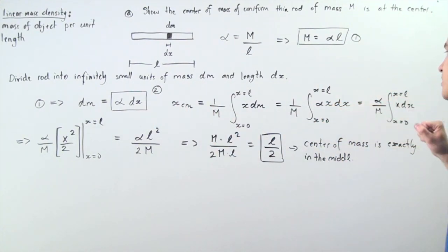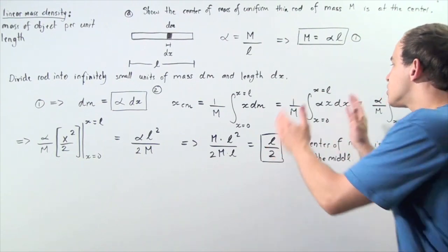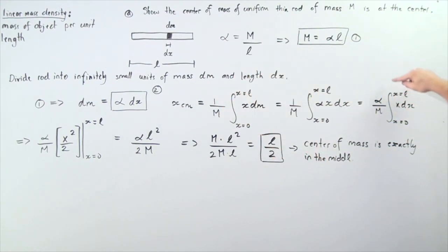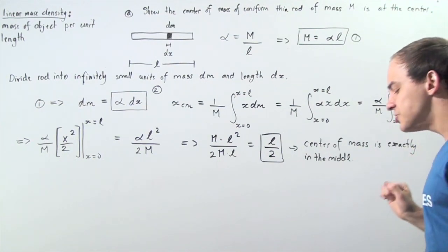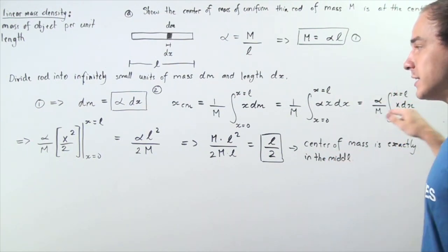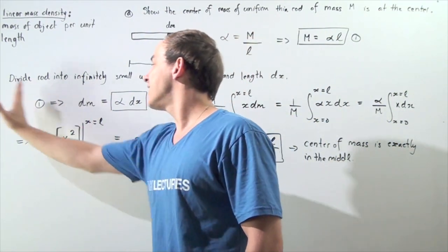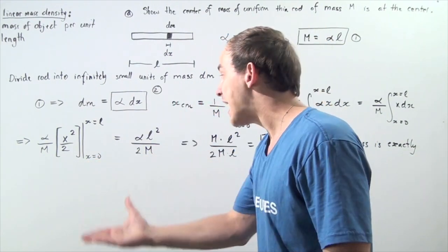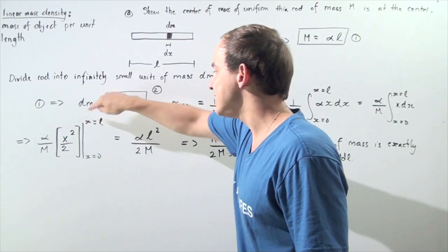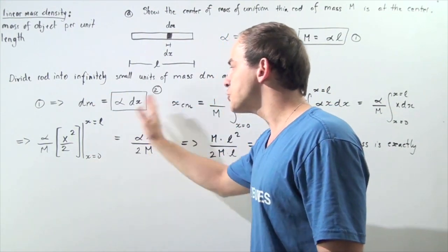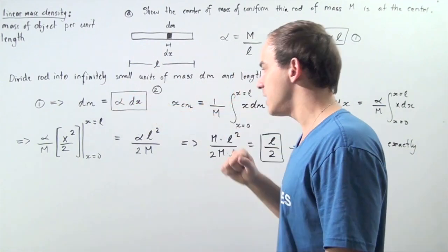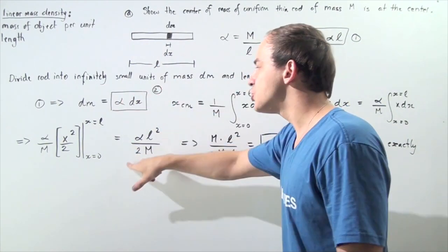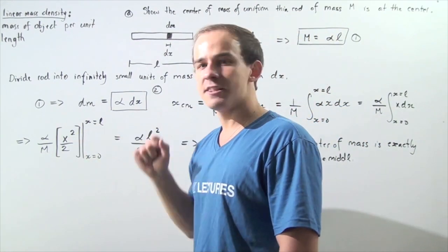Now we have the following result. Notice alpha is a constant, so we can take it outside the integral, giving us alpha divided by M times the integral from x equals 0 to x equals L of x dx. Integrating, we get x squared divided by 2, evaluated from 0 to L. The zero term disappears and we're left with alpha times L squared divided by 2M, where L was plugged into x.